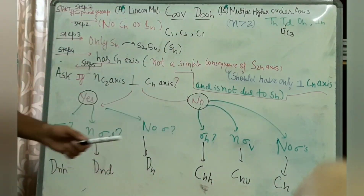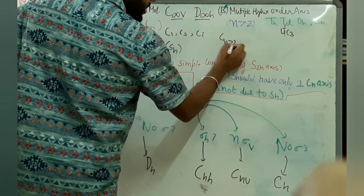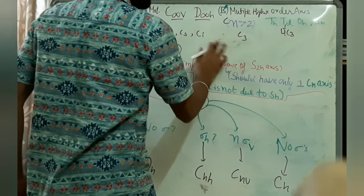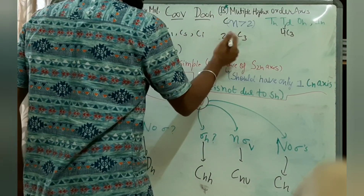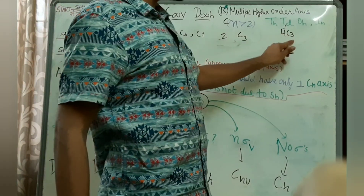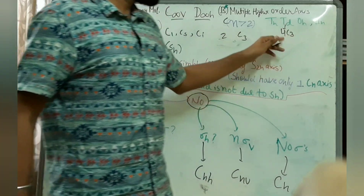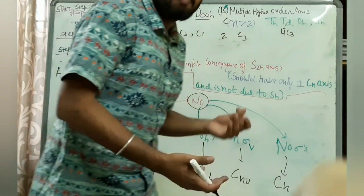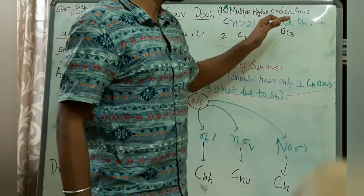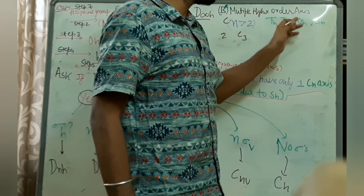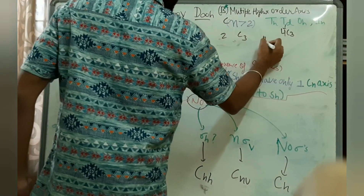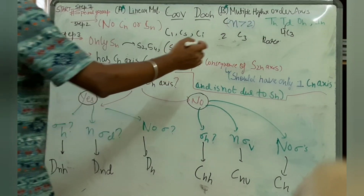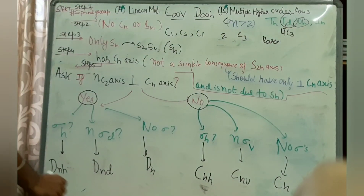The second special point group is molecules having multiple higher-order axes. That means if you have Cn where n is greater than 2 — like C3 — and you have multiple such axes, for example in a tetrahedron there are four C3s. So if you have multiple high-order principal axes, the molecule will belong to point groups such as Th, Td, Oh, etc. Tetrahedral and octahedral are the most important ones.